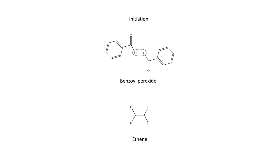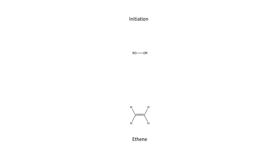The O-O peroxide bond is unstable and can be broken by treating the mixture with UV light. This creates a radical — a molecule with a single, unpaired electron, represented by a dot.